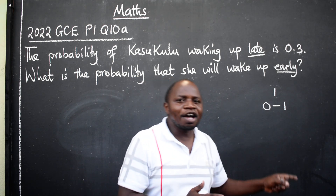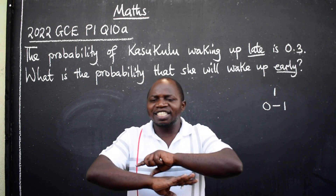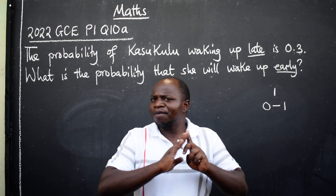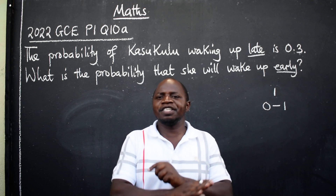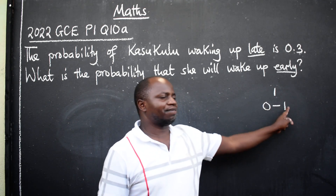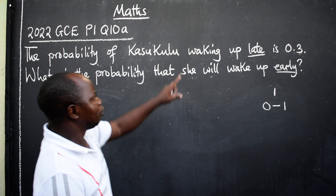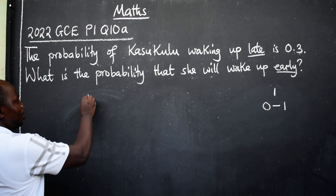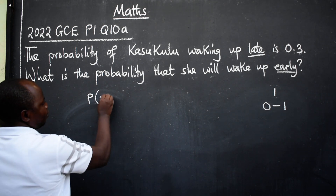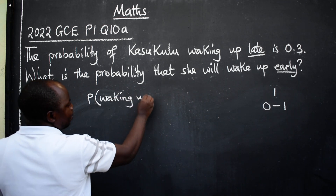Not 1.1 — there's nothing like that in probability. Not 2, not 3. You can't get probability 10 or probability 50. No. Always within this range. With that in mind, we are told that the probability of waking up late is given.